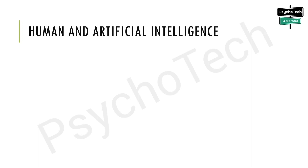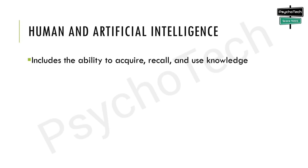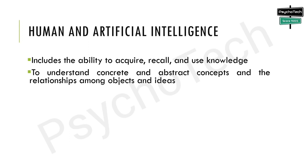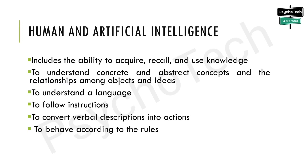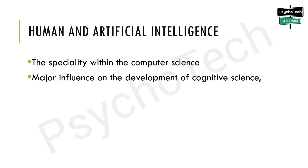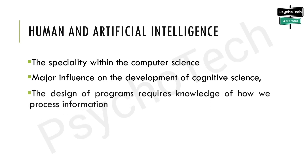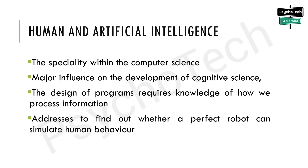The last domain of research in cognitive psychology is human and artificial intelligence. Nowadays we are all hearing about artificial intelligence — AI websites, AI tools, and evolving research. Human intelligence includes the ability to acquire, recall, and use knowledge; to understand concrete and abstract concepts and the relationships among objects and ideas; to understand a language; to follow instructions; to convert verbal descriptions into actions; and to behave according to rules and use knowledge in a meaningful way. The specialty within computer science called artificial intelligence has had a major influence on the development of cognitive science, especially since designing programs requires knowledge of how we process information. Cognitive psychology also addresses whether a perfect robot can simulate human behavior.